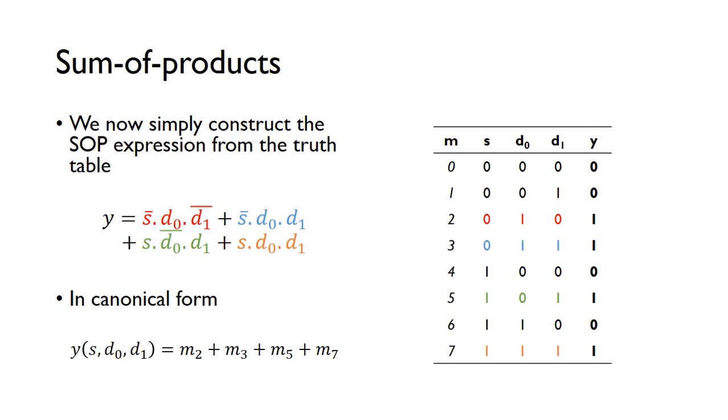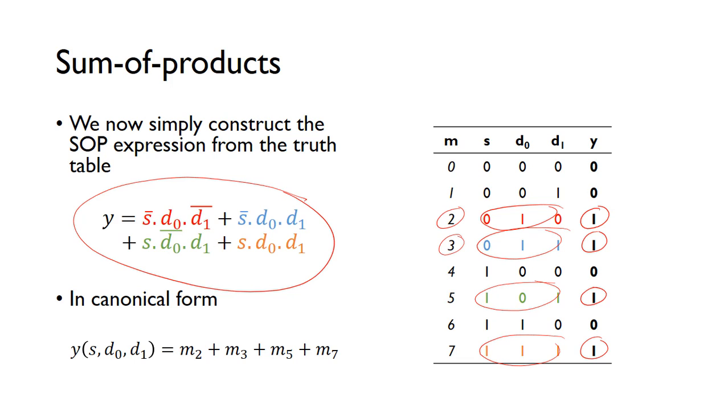We can construct the sum-of-products expression from the truth table. We look for all the cases where there's a 1 in the output column and write out the minterms. We sum them together to get the canonical form: m2 + m3 + m5 + m7.